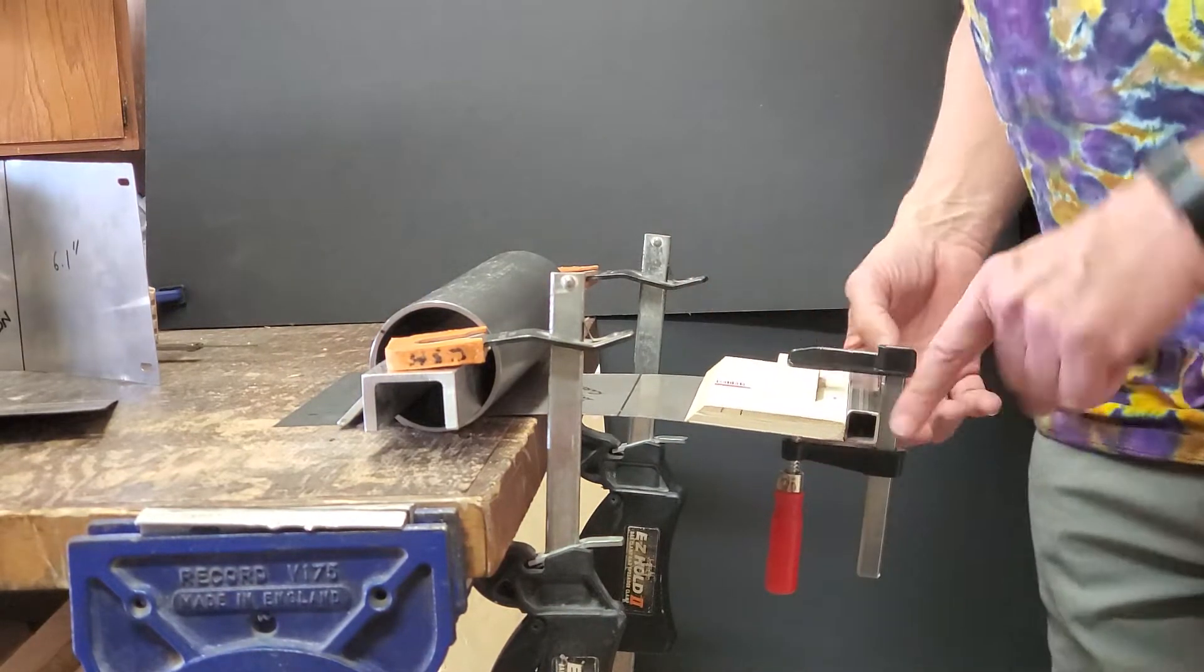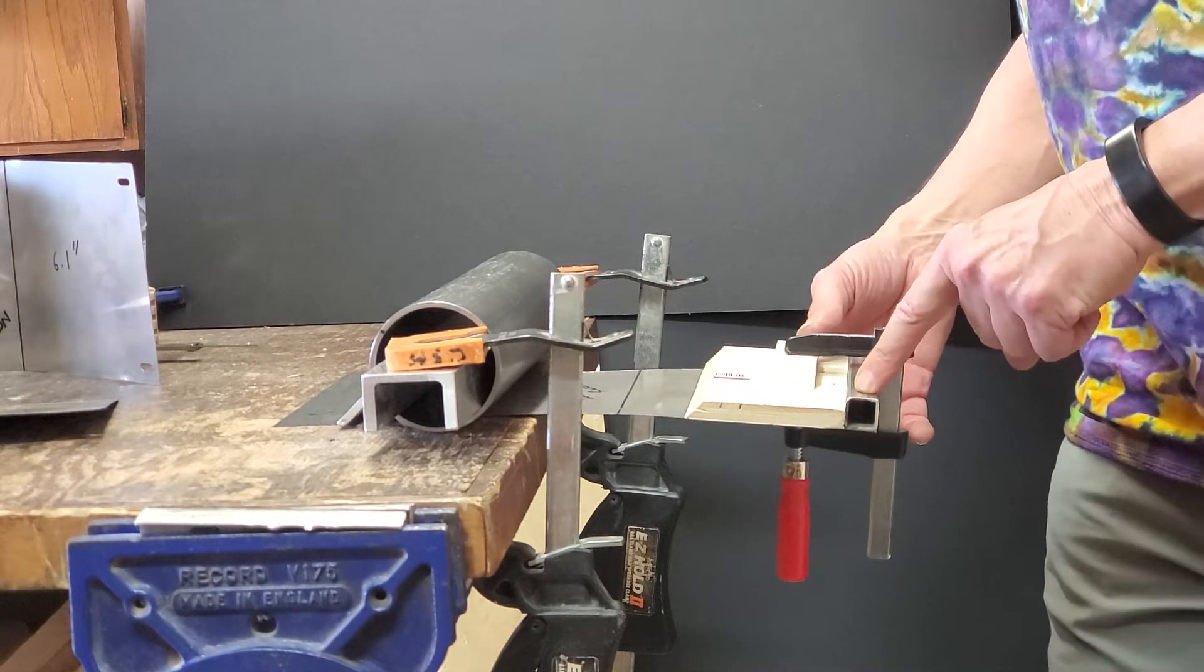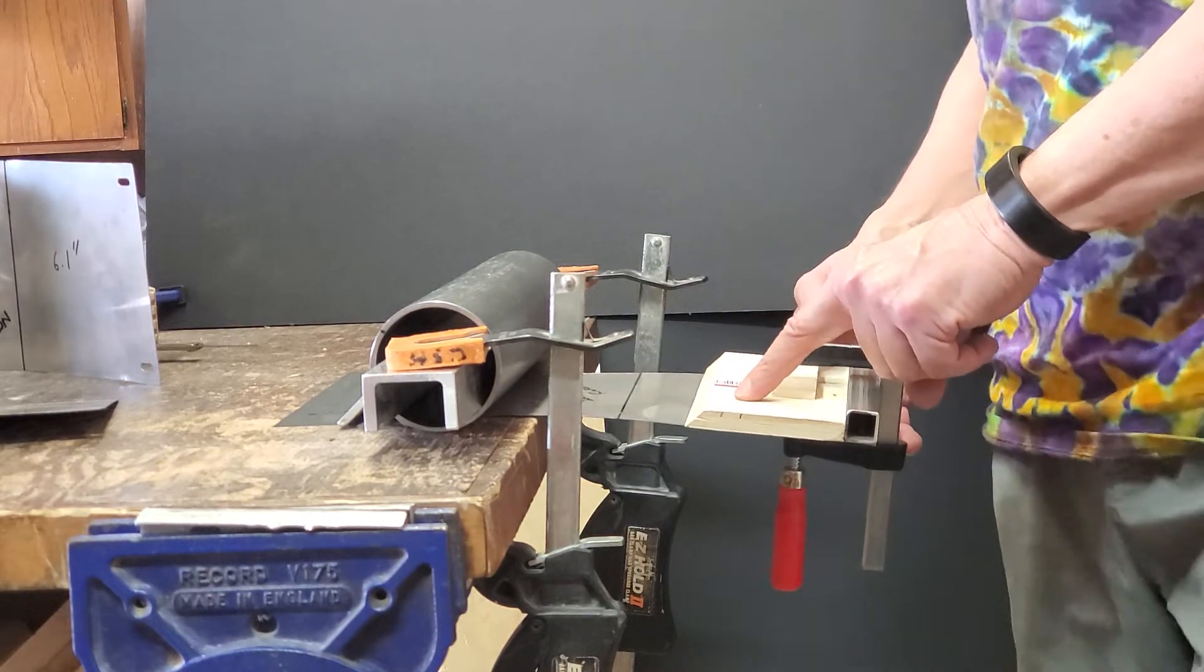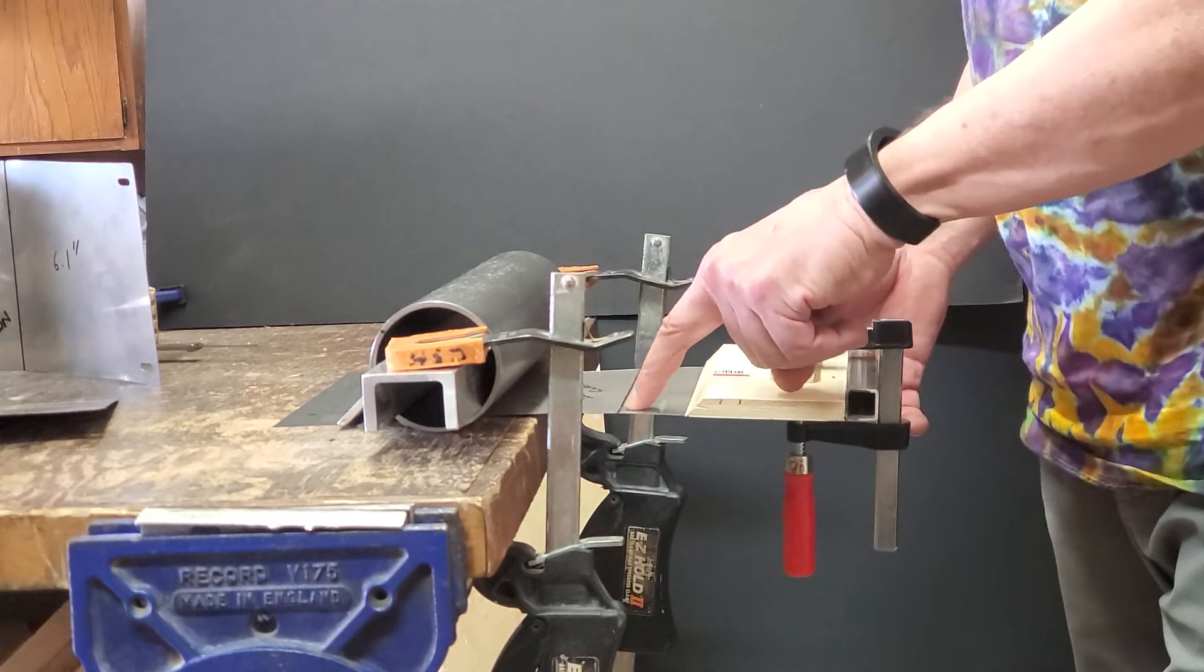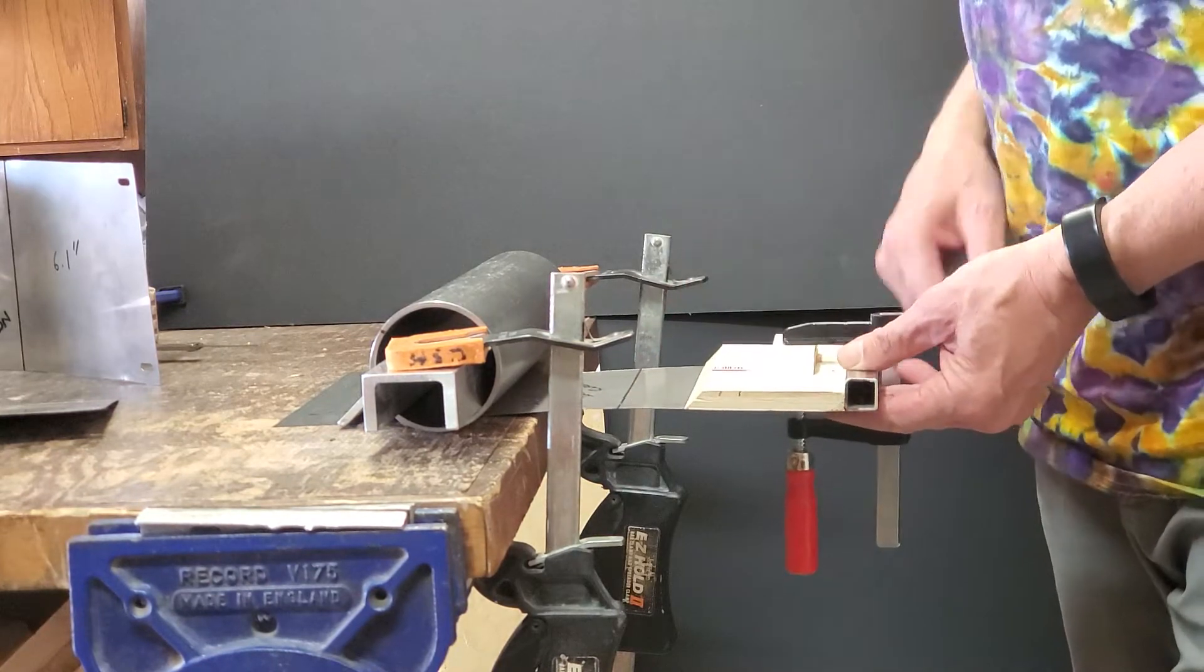On this end here I have the support tube that will be an actual part of the tool and then just this temporary stiffening block to help keep the sheet metal straight in this region.